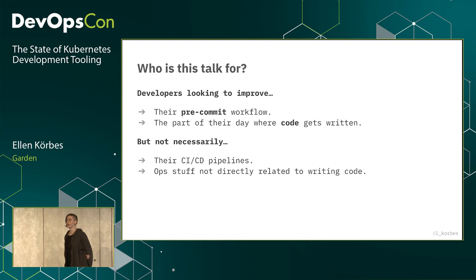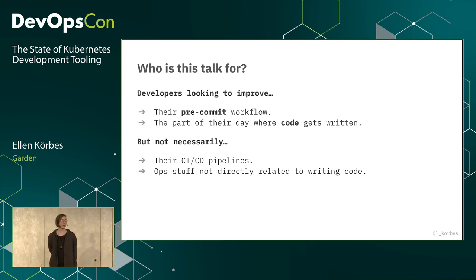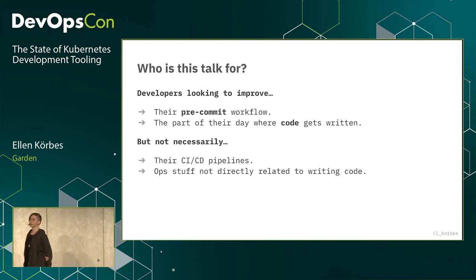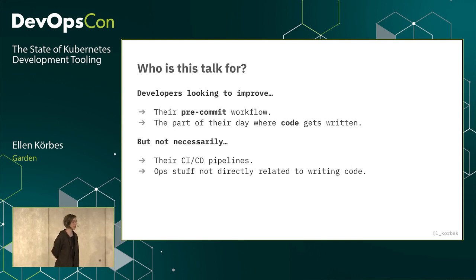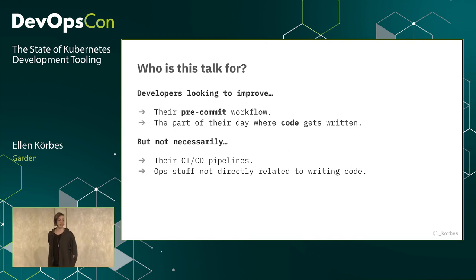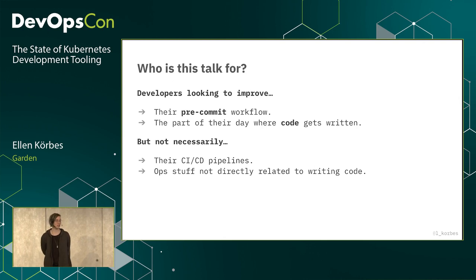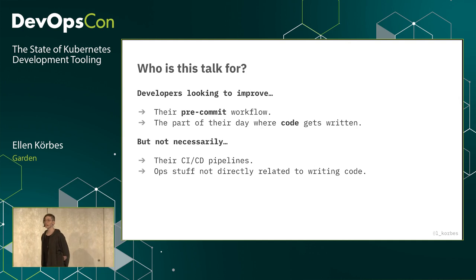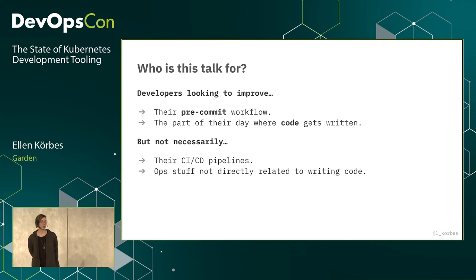I'm going to talk about tools that exist in the pre-commit stage — the part of the day where code gets written, where developers are writing words and tokens and weird little symbols on their IDEs, code editors, Vim or Emacs. I'm not going to talk about CI, CD, provisioning and that kind of thing.